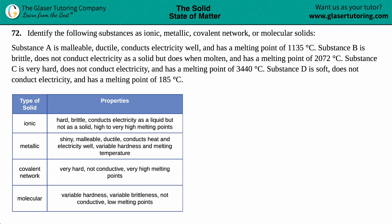Number 72. Identify the following substances as ionic, metallic, covalent network, or a molecular solid. Okay, so let's read the paragraph.